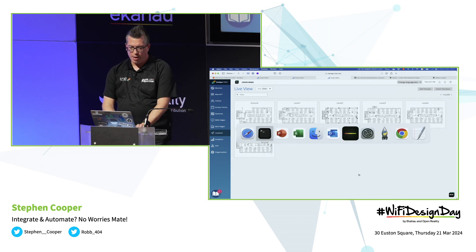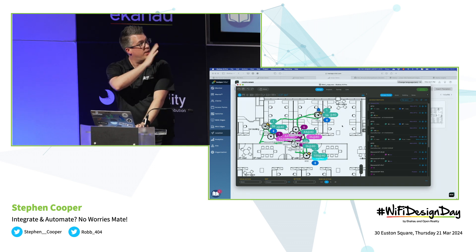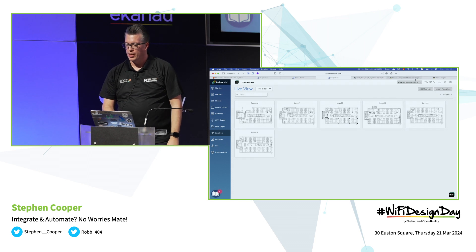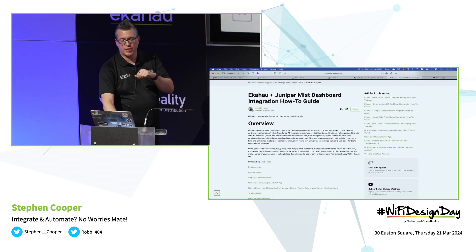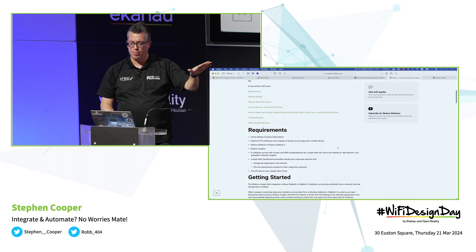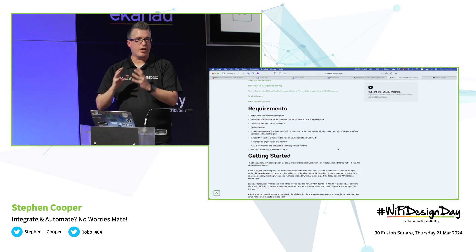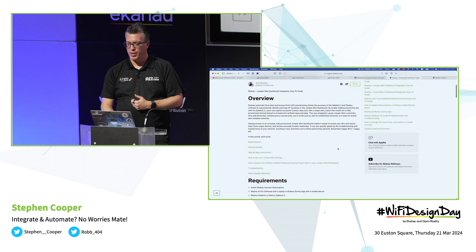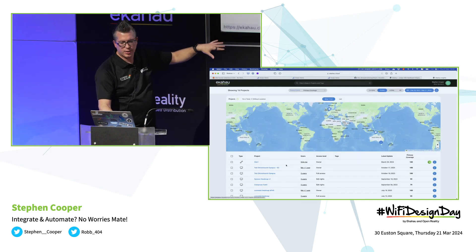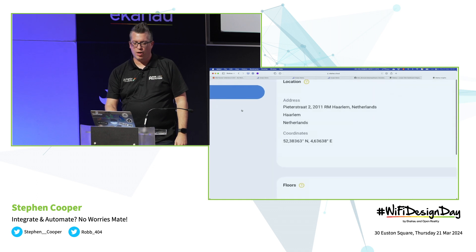This is where you can leverage your Ekahau project files. I've got my survey here done with Autopilot around this office with three APs. A lot of vendors these days have the ability to import directly from the Ekahau cloud into your vendor's cloud managed dashboard. This is the example of how to do this with Juniper Mist. Same process — it will pull in the APs already in production and pick up your surveyed AP locations — the actual real locations your APs have been deployed, surveyed with your Sidekick one or two. You go into Ekahau Insights, got your dashboard of all your projects, and select the site you want to export across to your Mist dashboard.